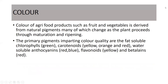The color of agri-food products such as fruits and vegetables is derived from natural pigments, many of which change as the plant proceeds through maturation and ripening. Judgment of the ripening of fruits is also influenced by color, so we can easily judge by looking at the color of a particular fruit or vegetable whether it has matured or ripened. The primary pigments imparting color quality are the fat-soluble chlorophylls, which impart green color; carotenoids, which impart yellow, orange, and red color to fruits and vegetables; the water-soluble anthocyanins, which impart red or blue color; flavonoids, which impart yellow color; and the betalins, which impart red color.